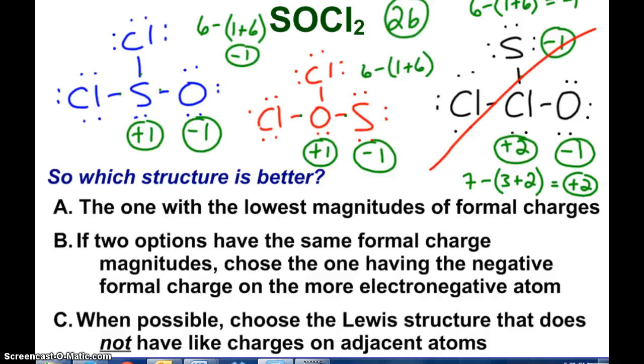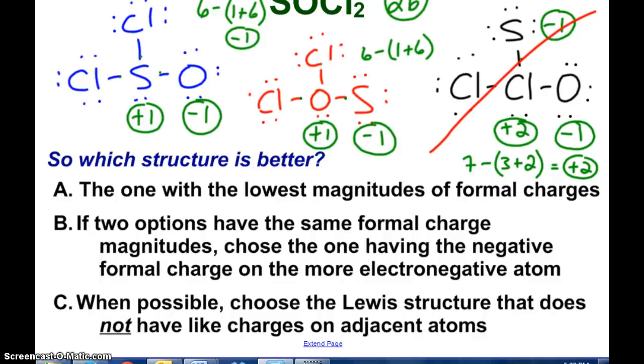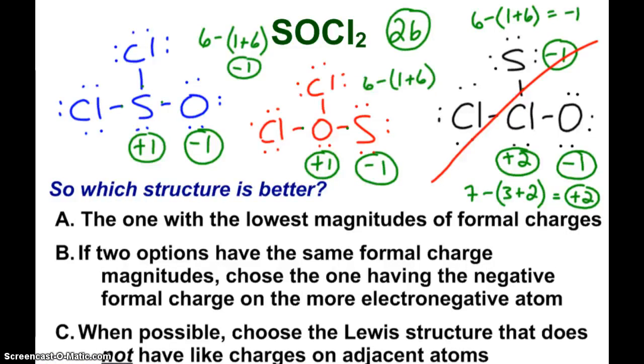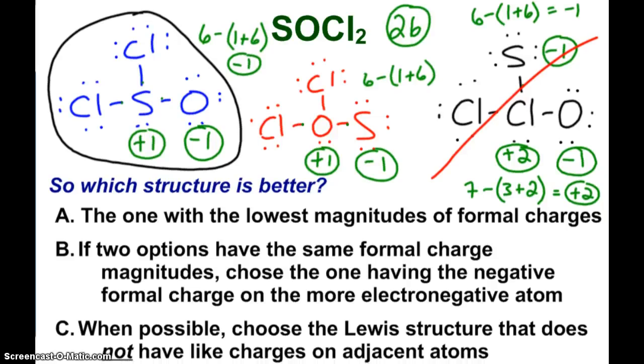So looking at the next two structures, I have two options. Same formal charge magnitudes, plus one, minus one. I'm going to choose the one having the negative formal charge on the more electronegative atom. Oxygen is more electronegative than sulfur. So when I check my electronegativity, oxygen is indeed more electronegative. This is the option that I would choose. And actually, that makes sense. Sulfur is less electronegative, and you see it there as the central atom.